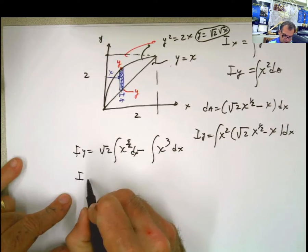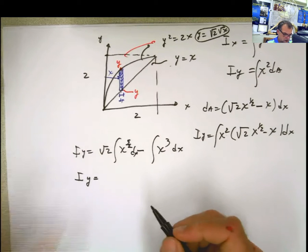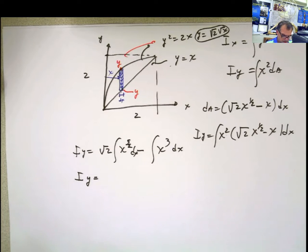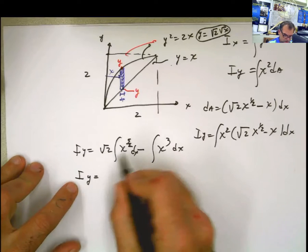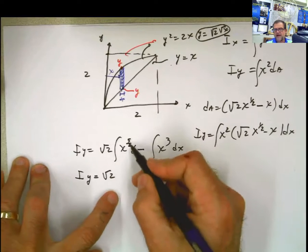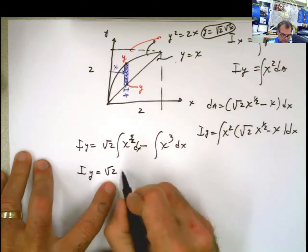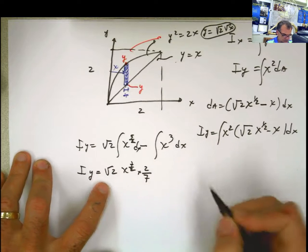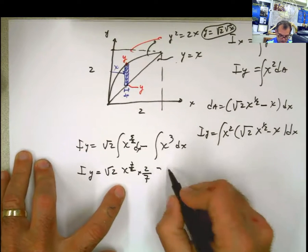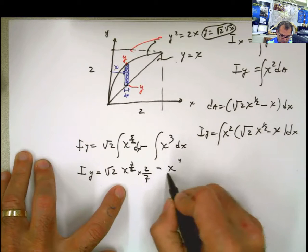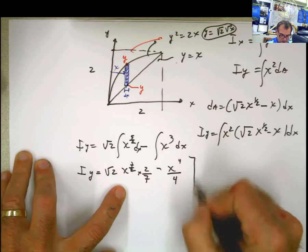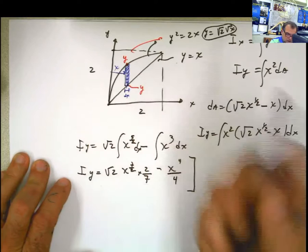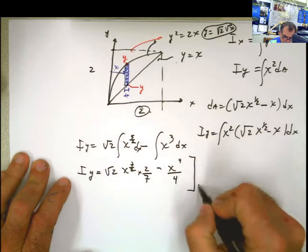I_y is equal to square root of 2 multiplied by this. Adding 1 to the exponent gives x to the 7/2 divided by 7/2, which is the same as multiplying by 2/7, minus x to the fourth divided by 4. This has to be evaluated from 0 to 2. Remember, we are sweeping our shape from this end to that end, so the limits are 0 to 2.